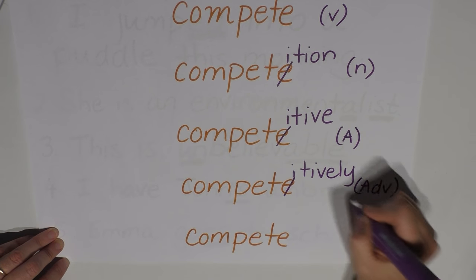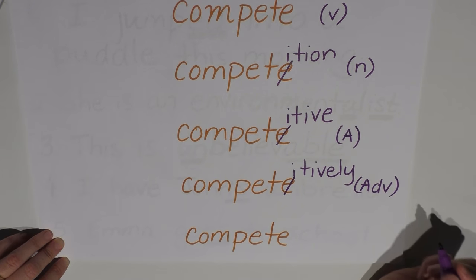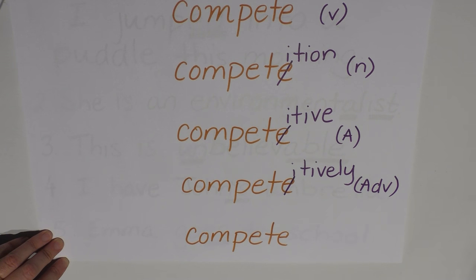So all these endings are changing the class of the word from a verb into something else. So these are derivational morphological changes. They don't have to go at the end. Derivational morphological changes can also go at the beginning.